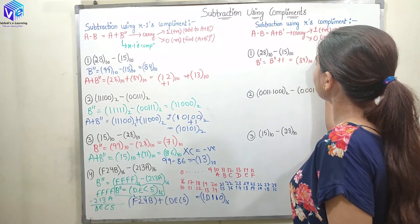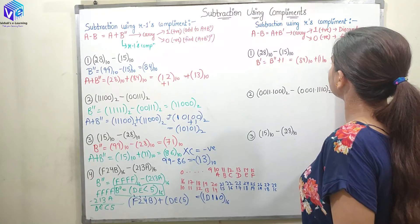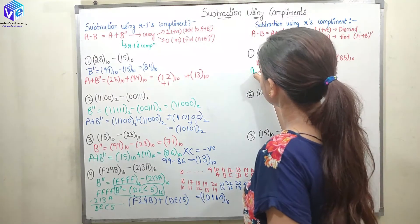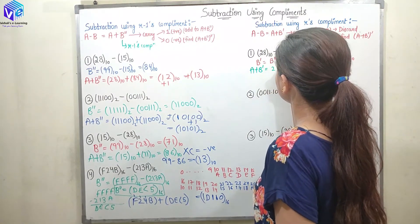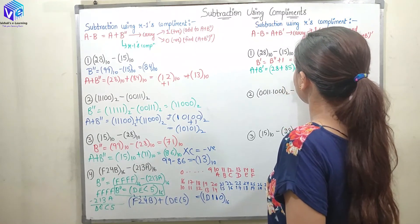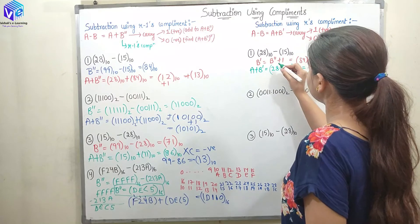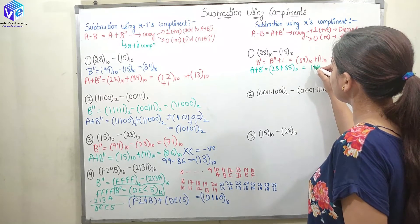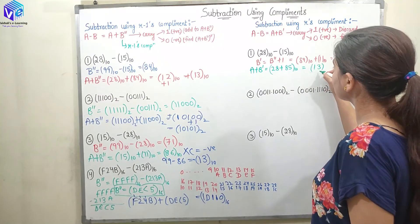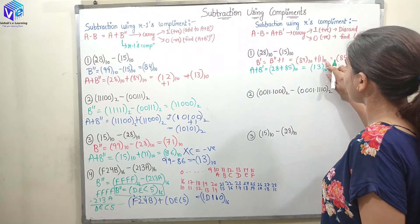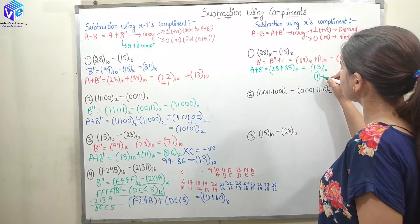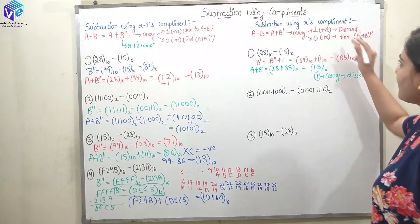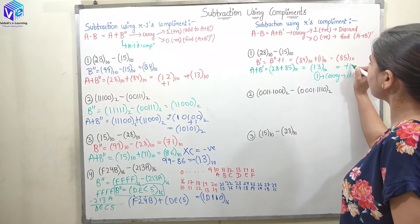What was B double dash? It was 84. So 84 plus 1 in base 10 is 85 — that is my B dash. Now I add A to it: A plus B dash equals 28 plus 85 in base 10. 8 plus 5 is 3 with carry 1; 8 plus 2 is 10 plus 1 is 11 — so we get 113, meaning carry is 1 and the result is 13. Carry 1 is discarded, and we have positive 13 as the answer. We all know 28 minus 15 is plus 13.